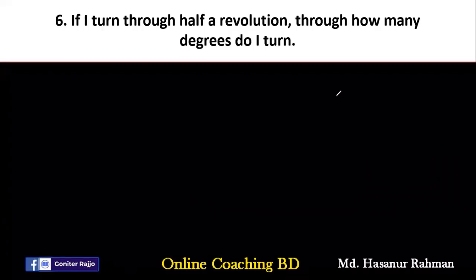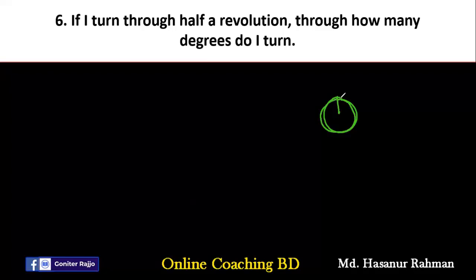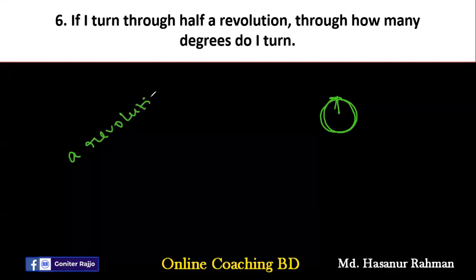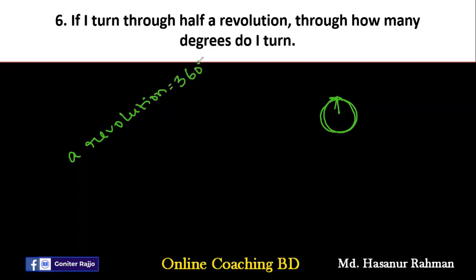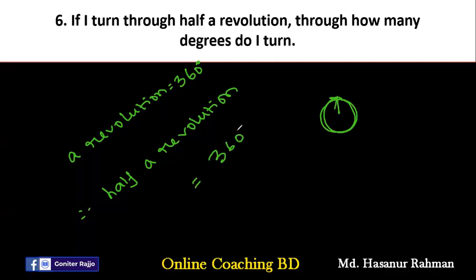Number six says: if I turn through half a revolution, through how many degrees do I turn? A revolution is the whole rotation — 360 degrees. If our minute hand completes a whole rotation, it creates 360 degrees. Half of a revolution means we divide 360 by 2, which gives 180 degrees. So if I turn through half a revolution, I turn 180 degrees.